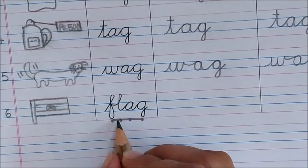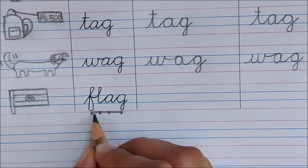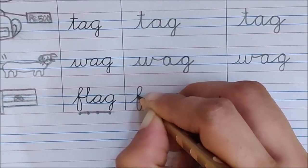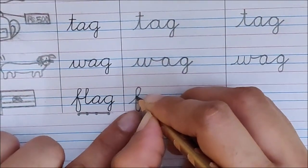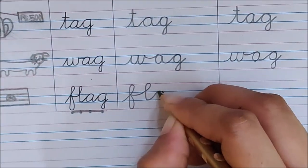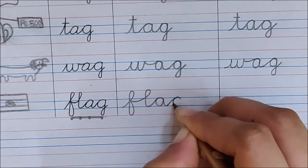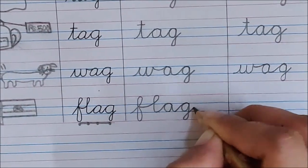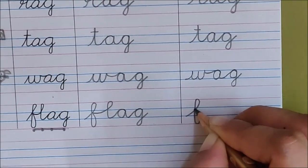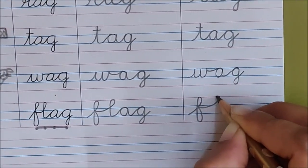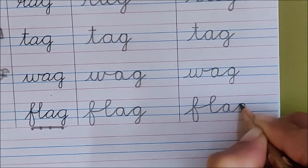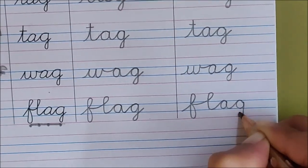The last word. F. L. A. G. Flag. So, write down. F. Children. Now, take the smiley of F up. Take it long. L. A. G. Flag. F. Take the smiley up. Loop behind. L. A. G. Flag.